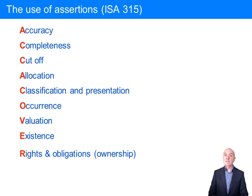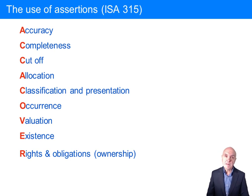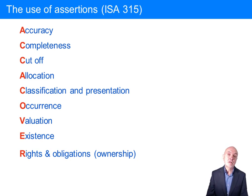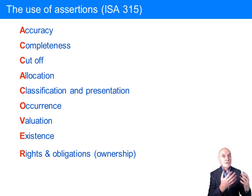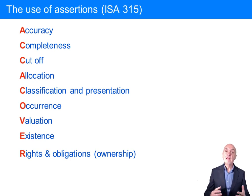And finally, rights and obligations. You see a piece of inventory, some item of stock — how do you know the company owns it? How do you know the company hasn't got goods on what is called sale or return? That they're not simply hosting another person's inventory in the hope that it might sell — it should be validly included in the inventory which we actually own.